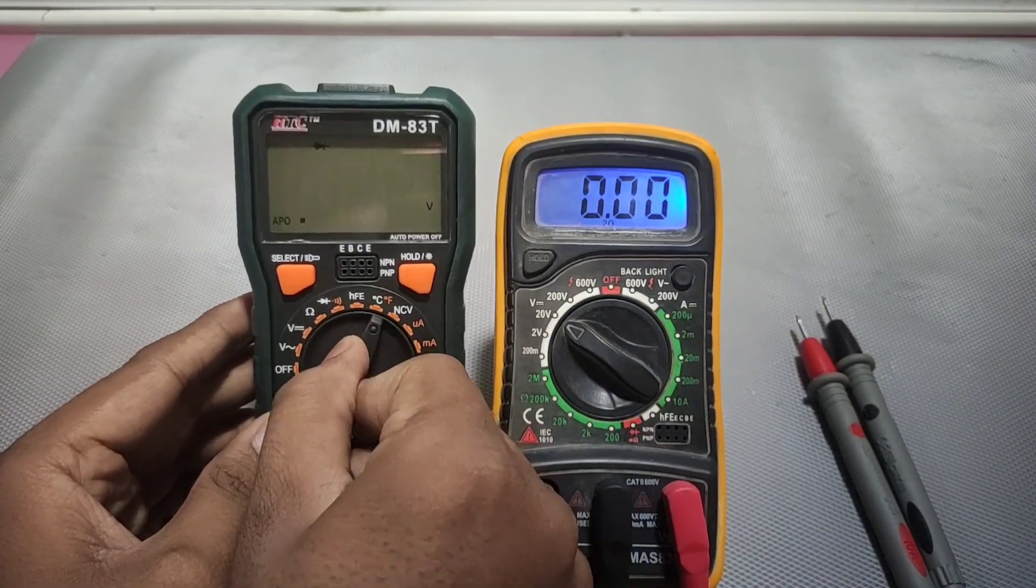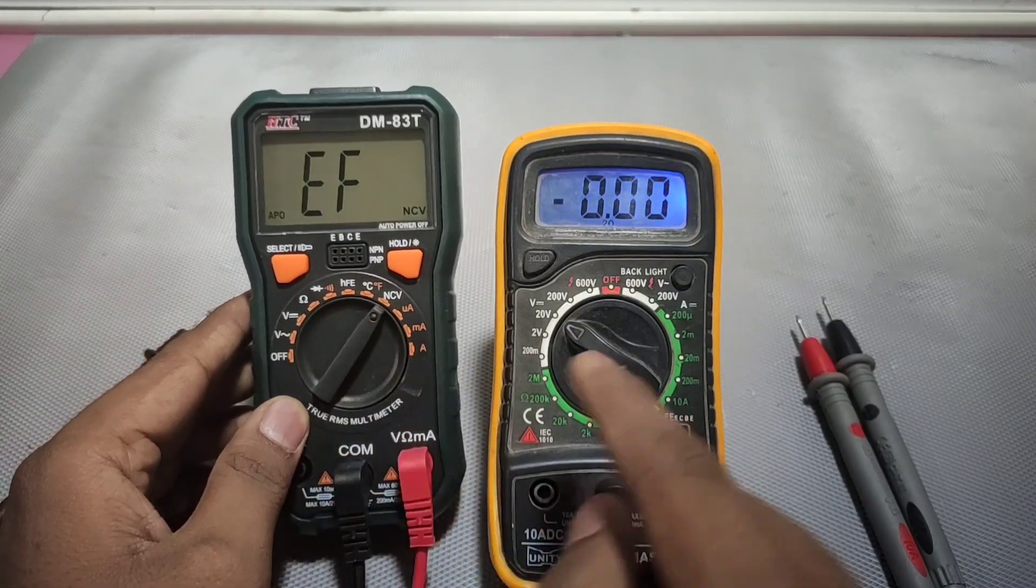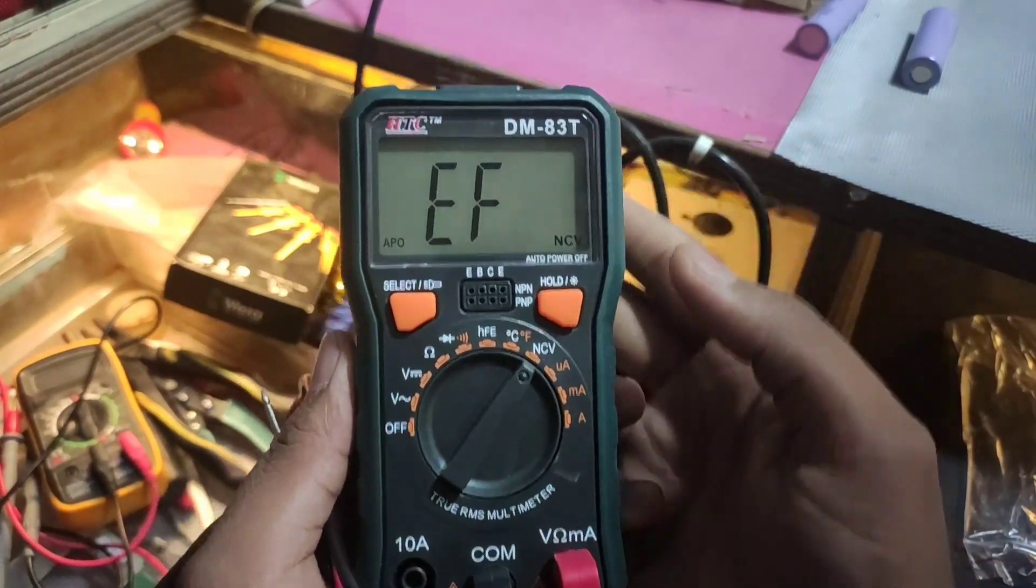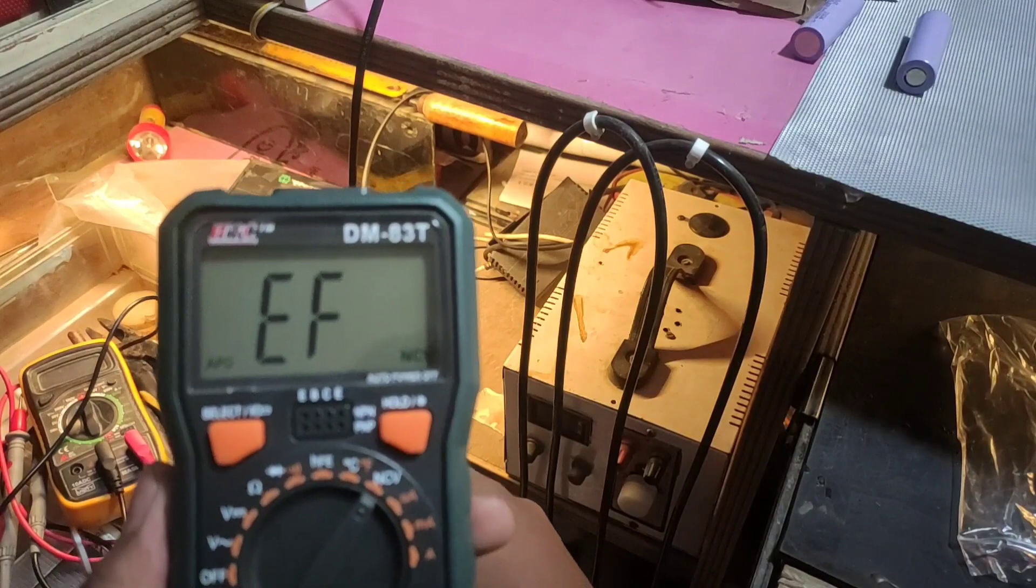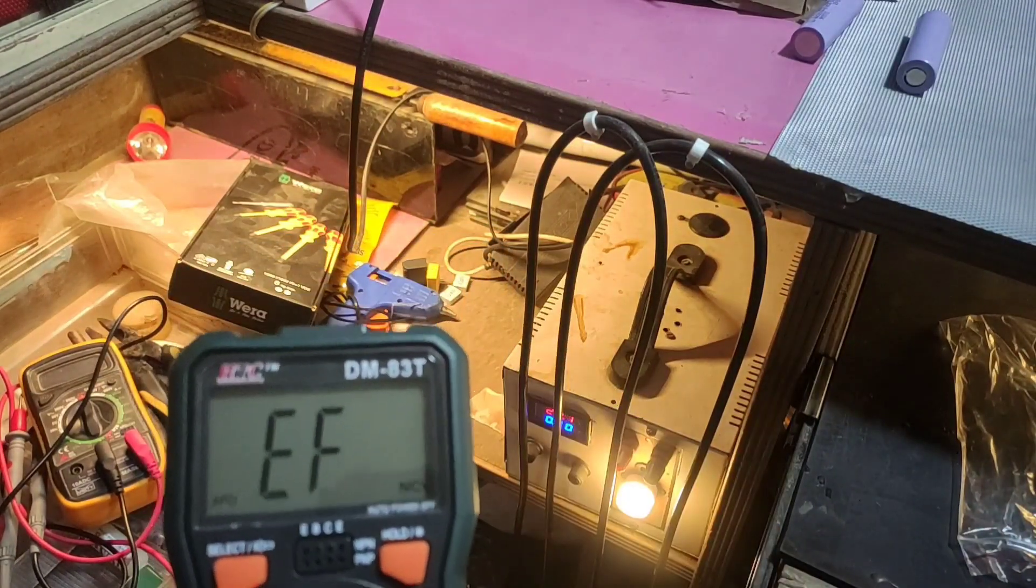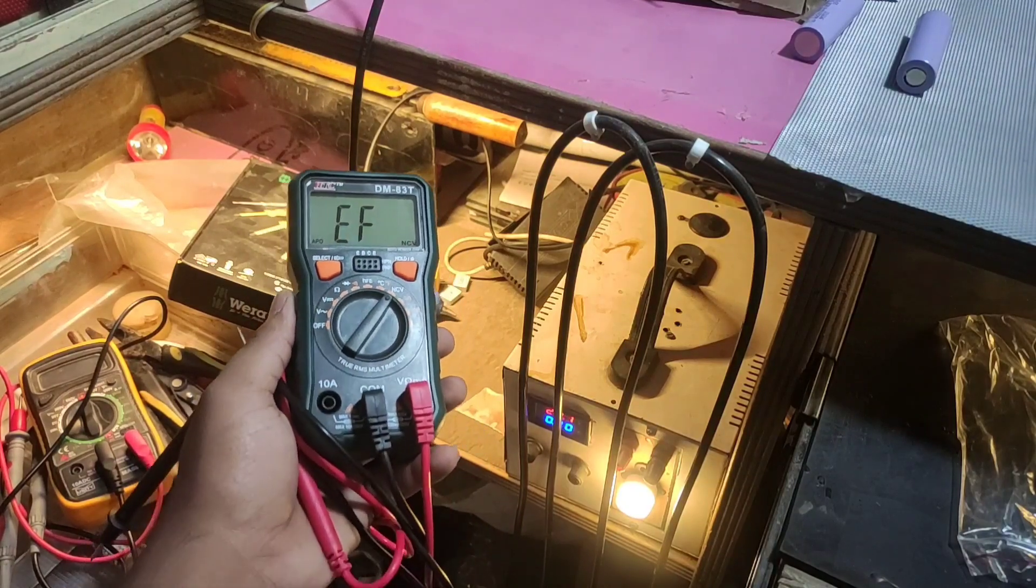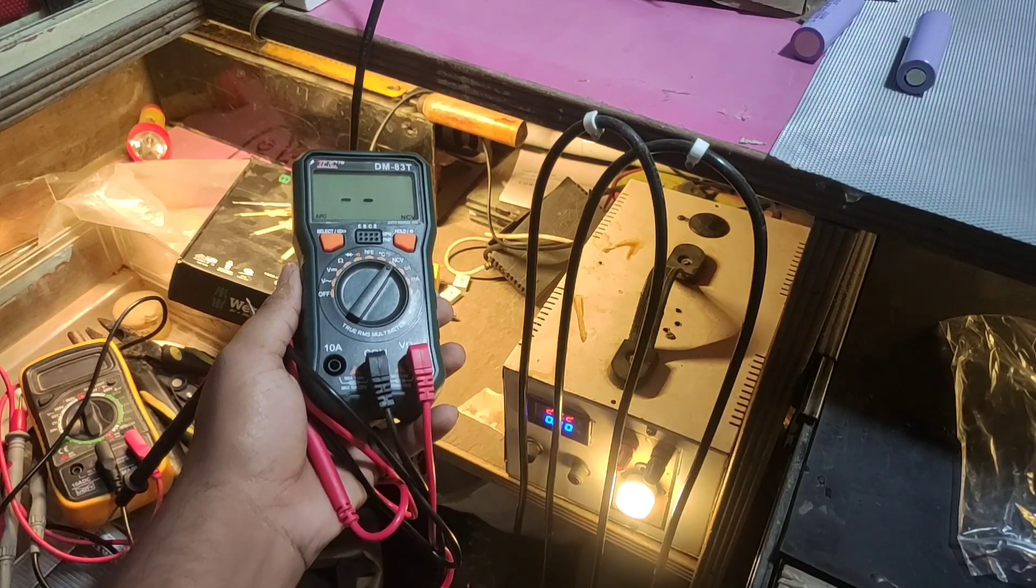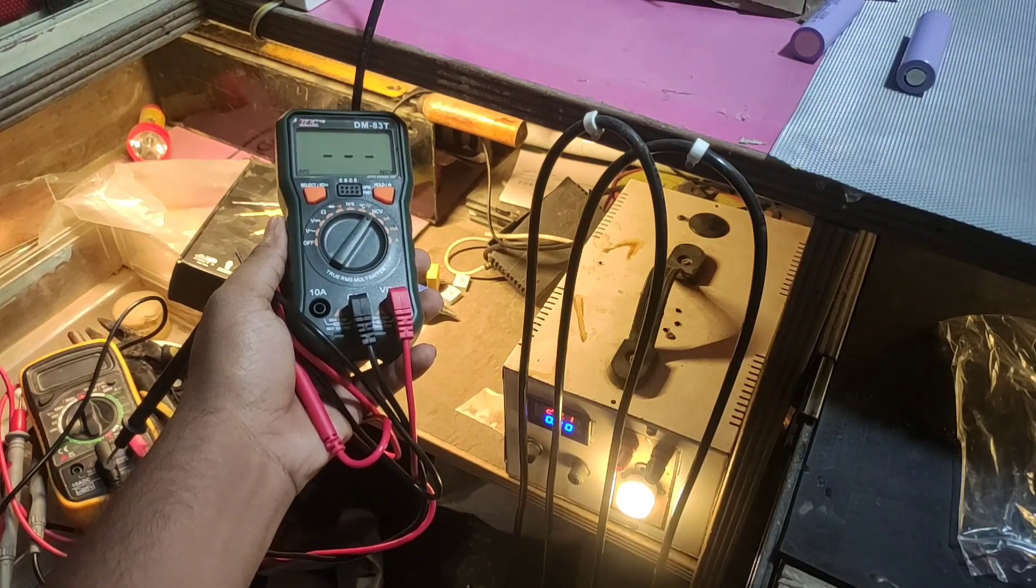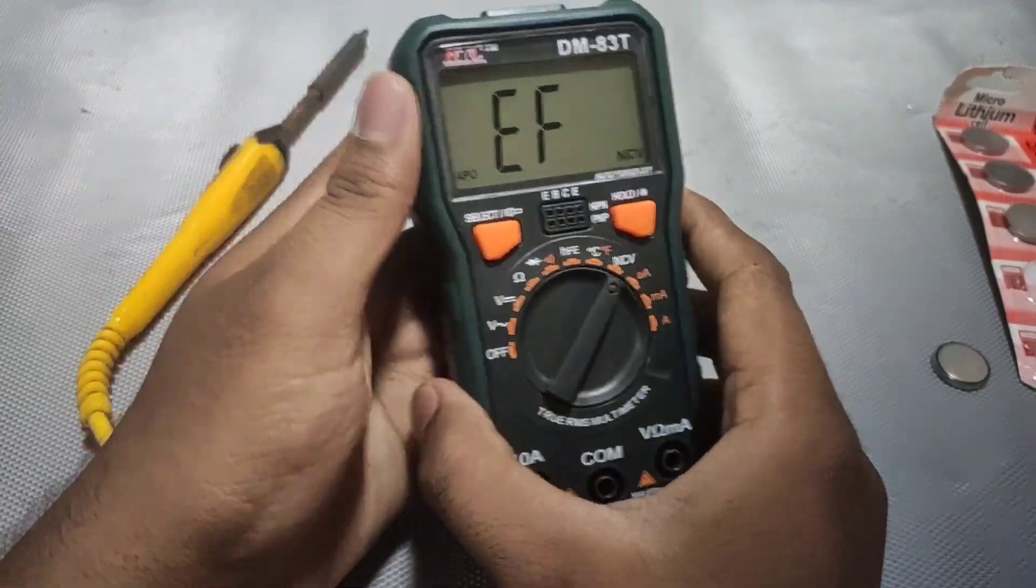So now let's go to NCV mode which means non-contact voltage detection. So for example you can see this is the wire going to my lab bench power supply. I will turn it on and watch the meter. You can see how it reacts to the voltage passing through the wire.